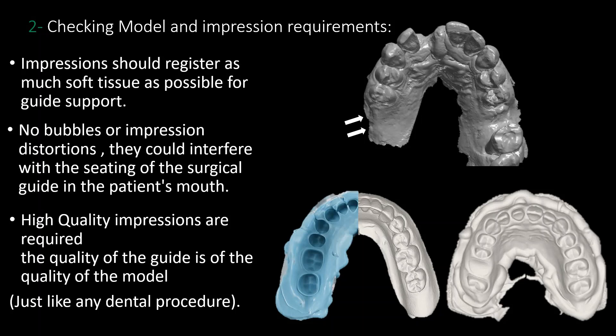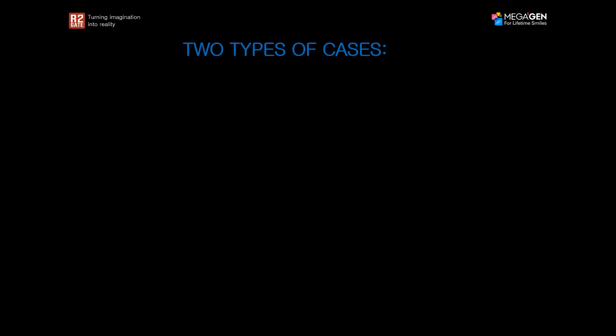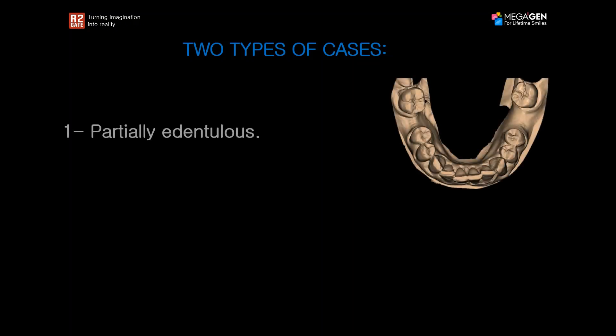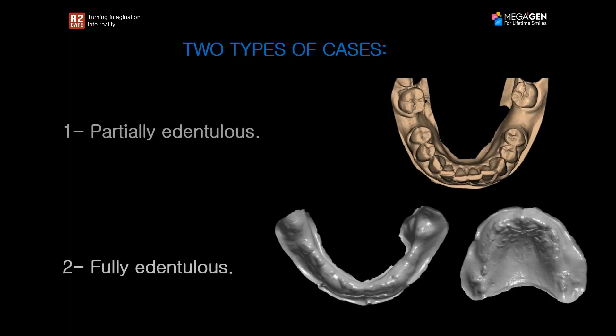Now let's move on to talking about the type of cases and how we manage each one. We have two different types: partially edentulous cases and fully edentulous cases. We'll learn about the differences between the protocols for guided surgery in each.